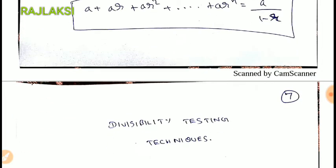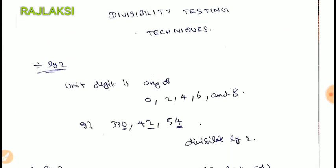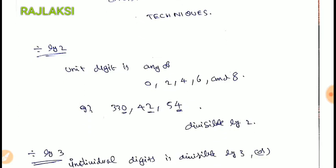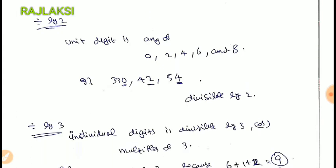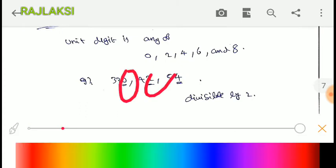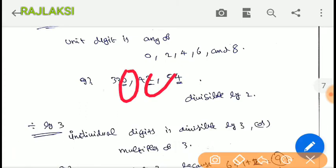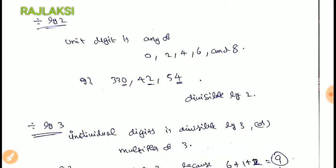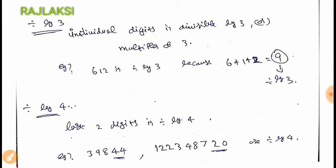You will have divisibility techniques — let me show you the techniques. Let me check the first one: a number is divisible by 2 if the unit digit is even — that is, 0, 2, 4, 6, or 8. That is divisible by 2. For divisibility by 3, the digit sum must be divisible by 3.